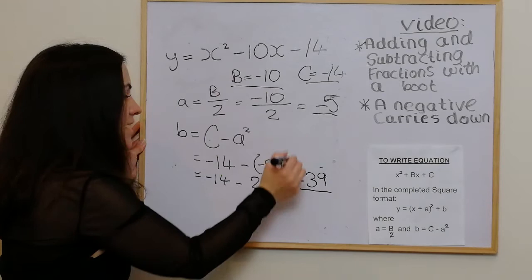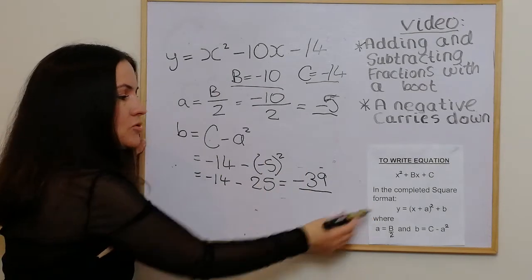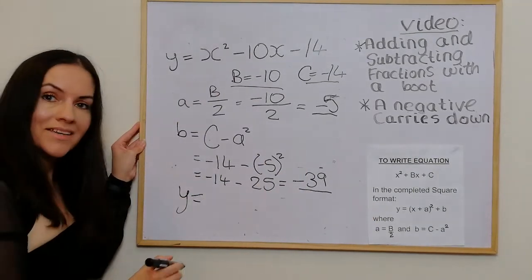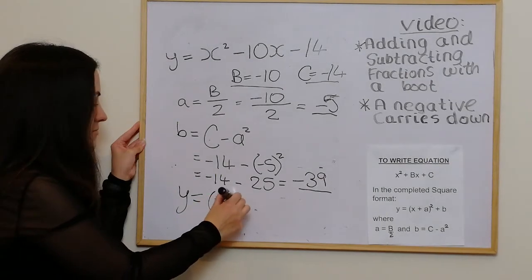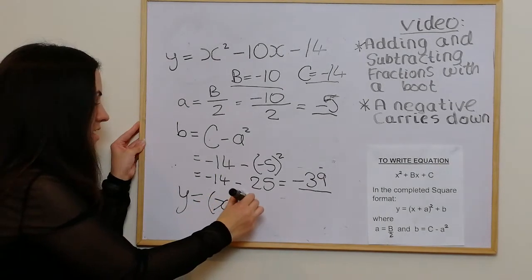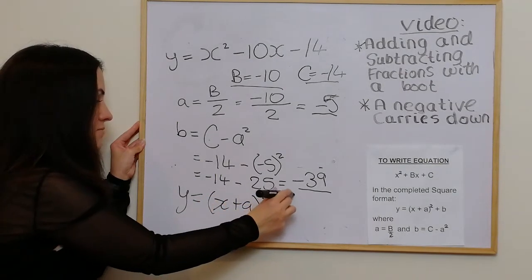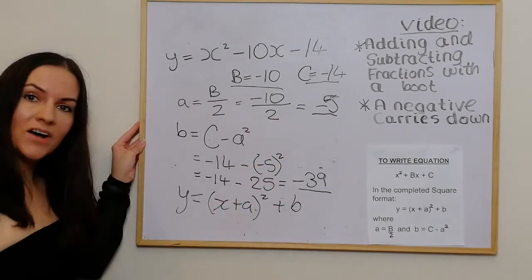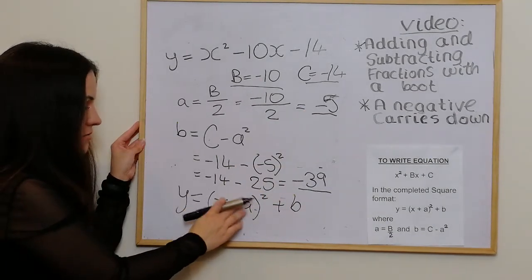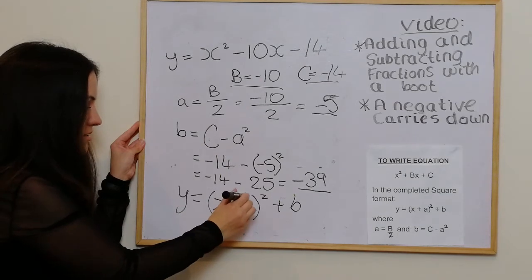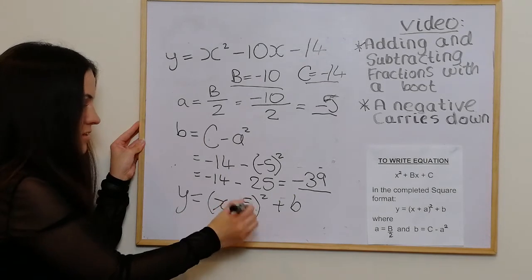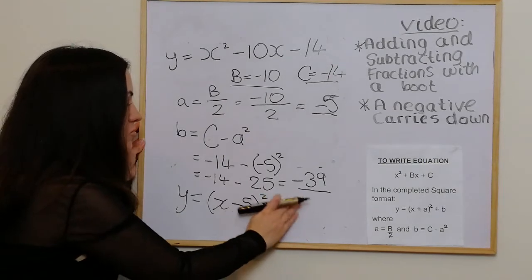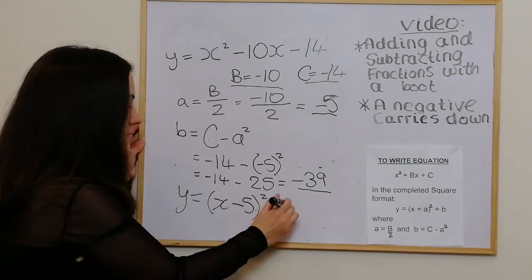We've got a equals negative 5 and b equals negative 39. Putting it into the y equals (x + a)² + b format, the a value of negative 5 carries down into the bracket, and b is negative 39, which also carries down.